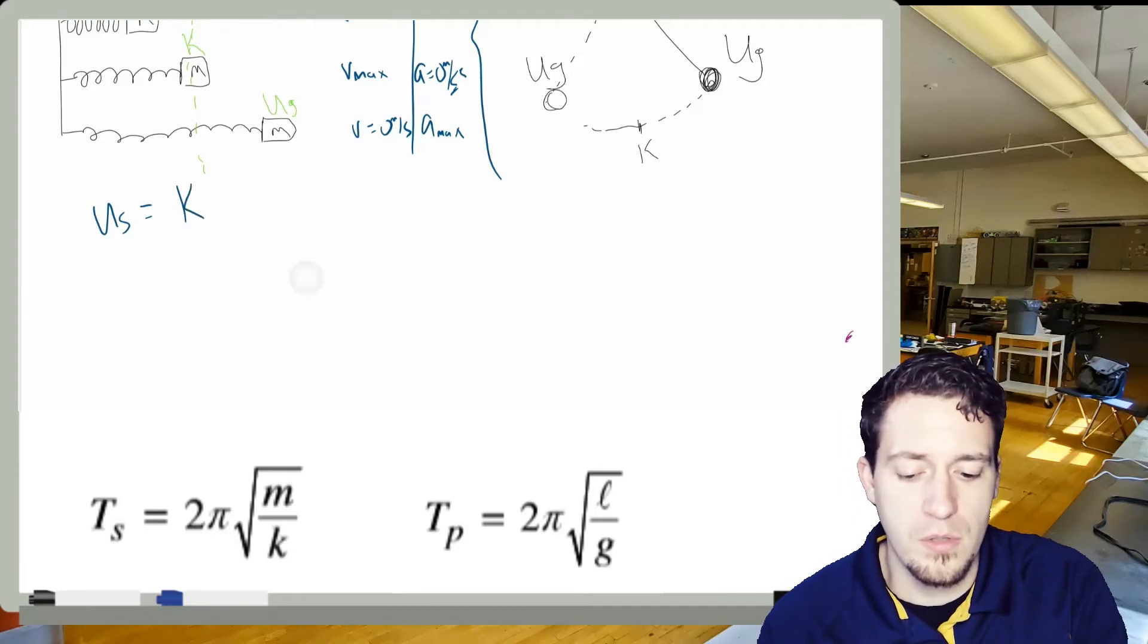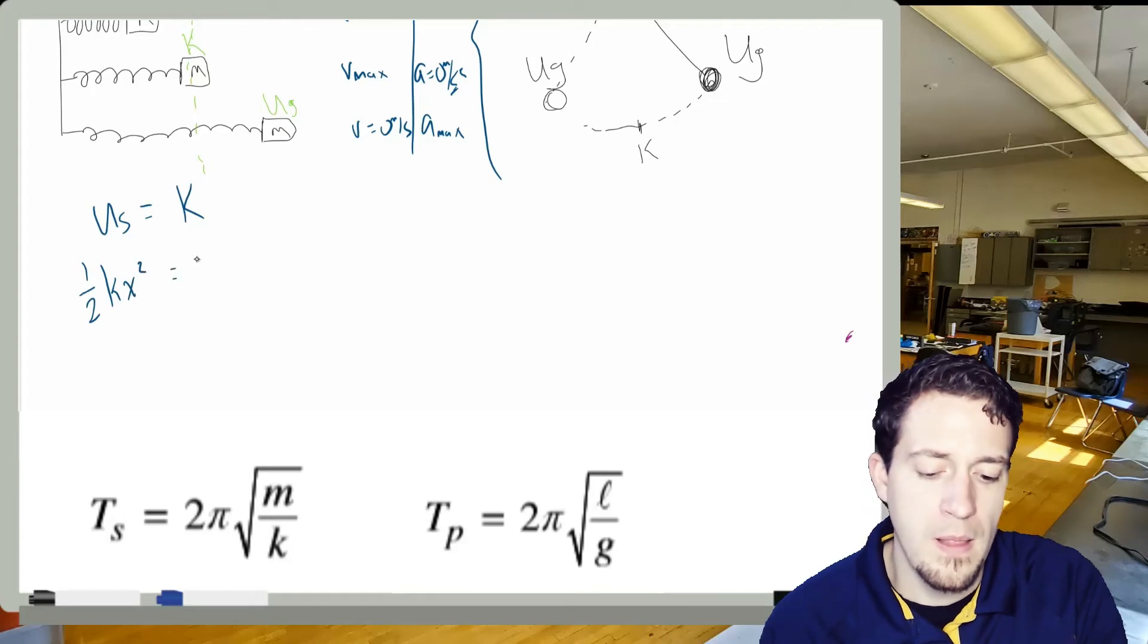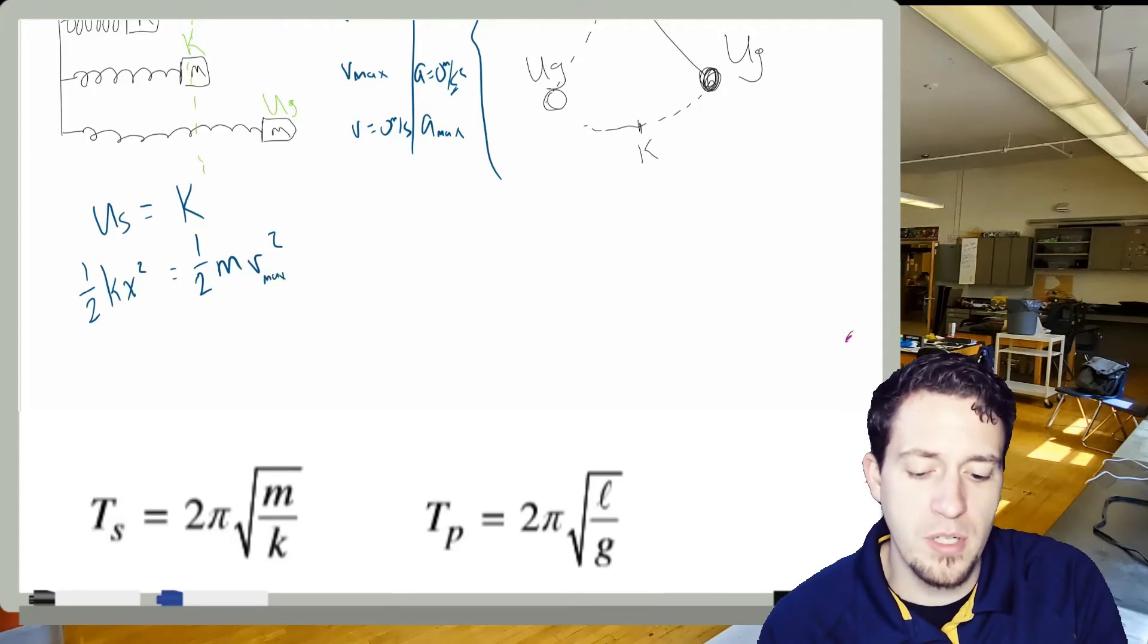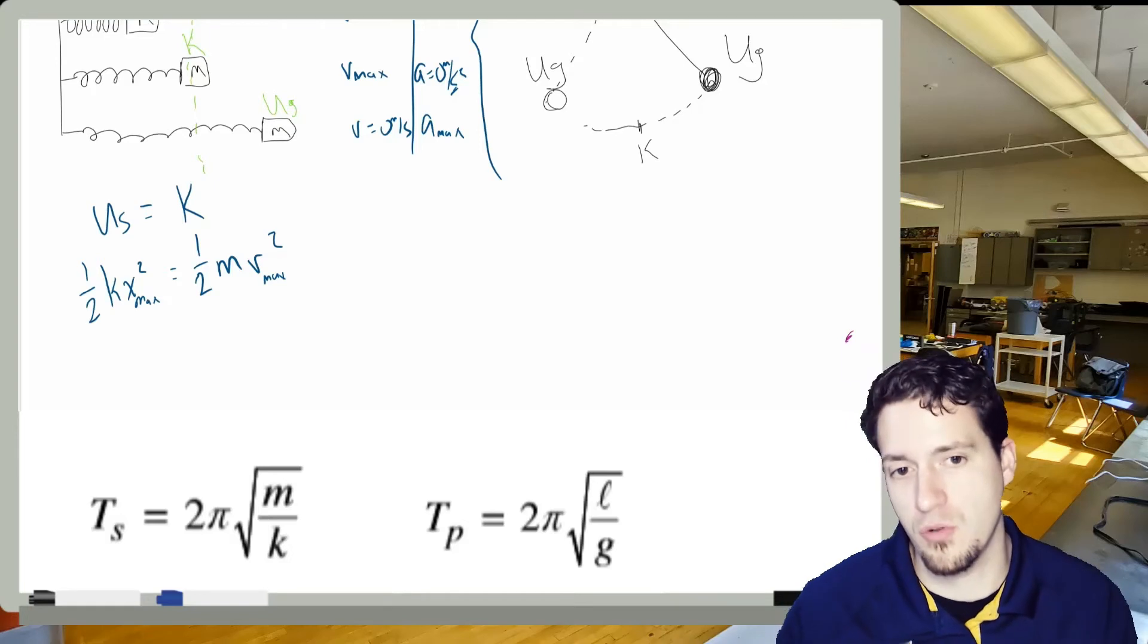So we could actually say that the initial spring potential of the system would be equal to the maximum kinetic energy. So I would have my equations. This is 1/2 kx squared. This is 1/2 mv squared. And this would be v max we're looking at. So that means this x would be max as well, the maximum stretch or squish.